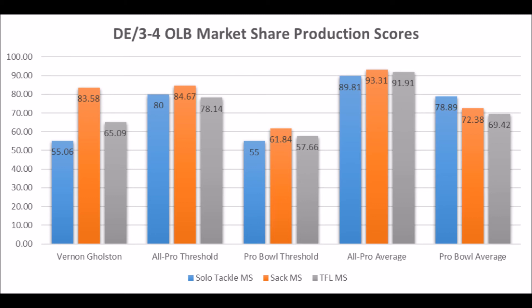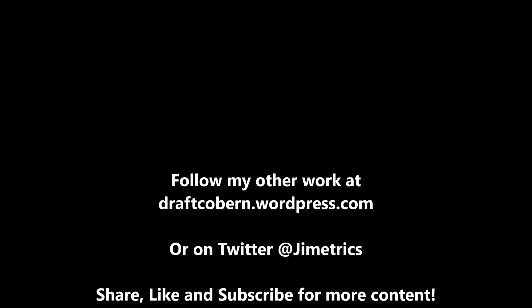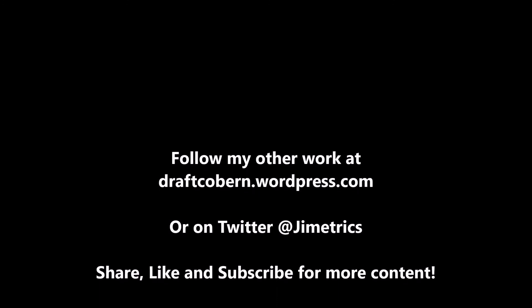If you properly value players, Vernon Golston easily should have been more of a late first to mid-first type of prospect, but was unfortunately pushed into the top 10 due to his athleticism traits and ultimately didn't live up to expectations. My name is James Coburn — you can find my other work at draftcoburn.wordpress.com and follow me on Twitter at gymmetrics. If you like this content, leave a like, subscribe, share the video, and hit that notification button so you're reminded when another video drops.